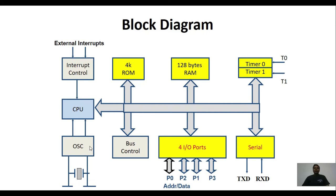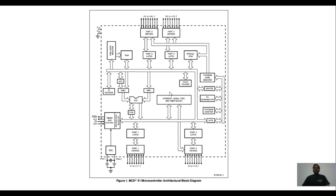The next block is the oscillator block, used for generating the clock signal. A clock signal is required for any sequential device or controller for its proper operation. We also have a bus control block, used for generating the signals to send data from one peripheral to another inside the 8051 itself. This completes the block diagram of 8051.